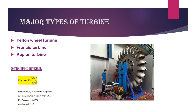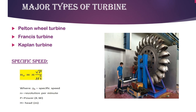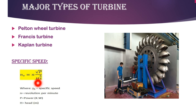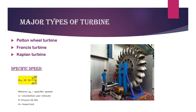The most common turbine types are: Pelton wheel turbine, Francis turbine, and Kaplan turbine. Specific speed ns is defined by the formula: ns equals n times root of P, divided by H to the power 5/4, where n is revolution per minute, P is power generated, and H is gross head. Specific speed is the speed of a turbine that would generate unit power under unit head.